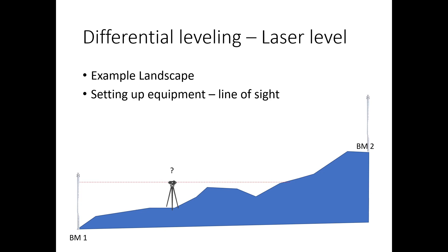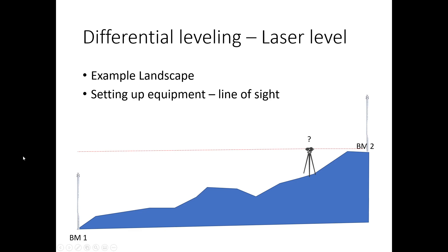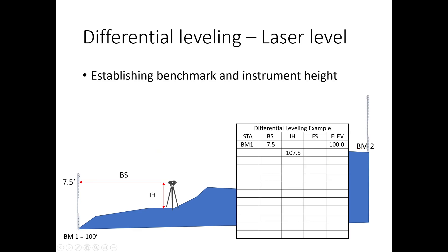We can try to set the instrument here, but obviously that doesn't work. Move it further up and we're too high for this rod but still too low for that one. Set it further and we can finally reach the second rod but we're way too high on this side. So we'll walk through the process of how to solve this. The first thing is we have to shoot Benchmark 1 first, so we set up where we know we can hit it.